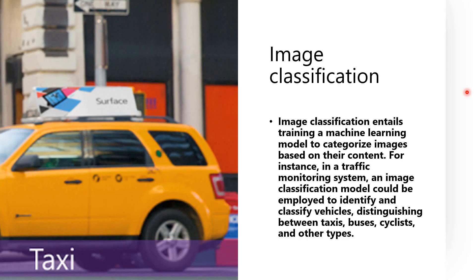We need to understand certain scenarios and models which are connected to computer vision. The first one is image classification. Image classification entails training a machine learning model to categorize images based on content. That is all. Let us take a simple instance.